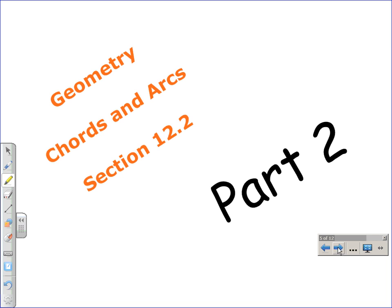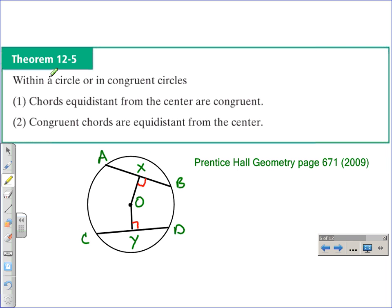Let's jump into today's theorem. Today's theorem is theorem 12-5. I just want to remind you that the theorem number is specific to the Prentice Hall geometry series, copyright 2009, and this particular theorem is found on page 671. Theorem 12-5 is broken down into two parts. Both of those parts are related to this idea that within a circle or in congruent circles.